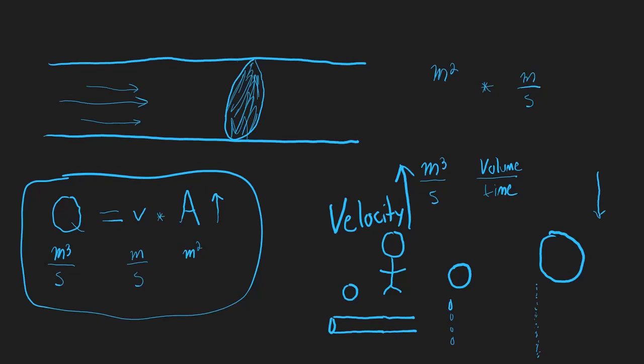So on the MCAT, you might see a question like this. Volume flow rate equals velocity times area. Typically, you're going to get two of the three variables. You may need to convert a little bit between variables to ultimately make the equation work. But this is how the equation works. This is how you solve a problem like this.